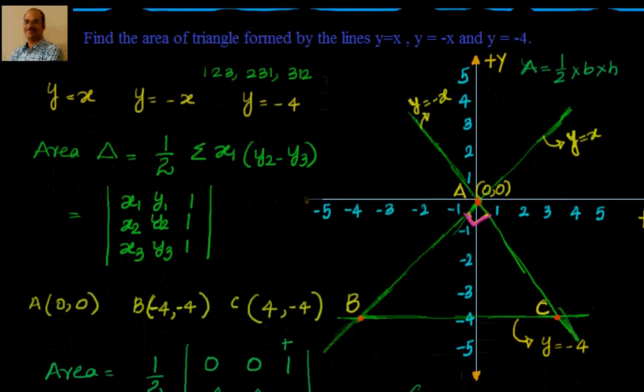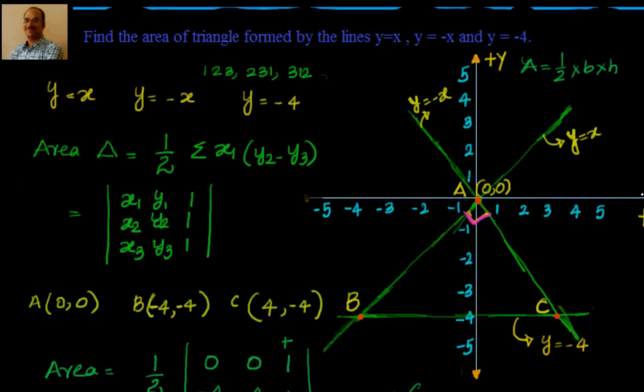So let's summarize what we have done. To find the area of the triangle formed by the lines y equal to x, y equal to minus x, y equal to minus 4. The lines may not be as simple as that.